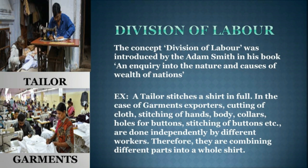Division of labor. The concept of division of labor was introduced by Adam Smith in his book 'An Enquiry into the Nature and Causes of the Wealth of Nations.' Division of labor means dividing the work among different laborers. For example, a tailor stitches a shirt in full, but in garment export, cutting of cloth, stitching of hands, body, collars, holes for buttons, and stitching of buttons are done independently by different workers, who then combine different parts into a whole shirt.